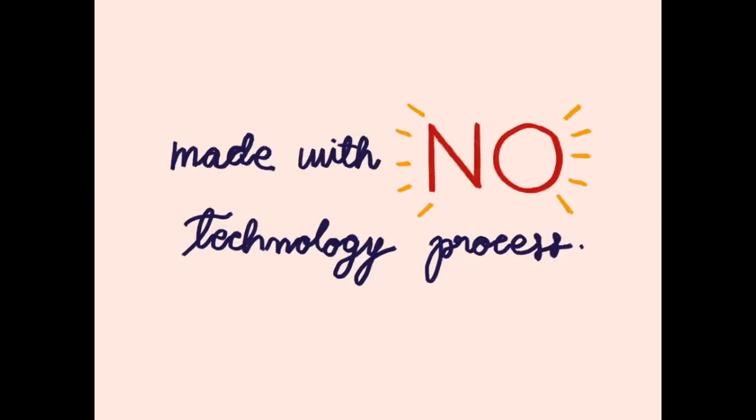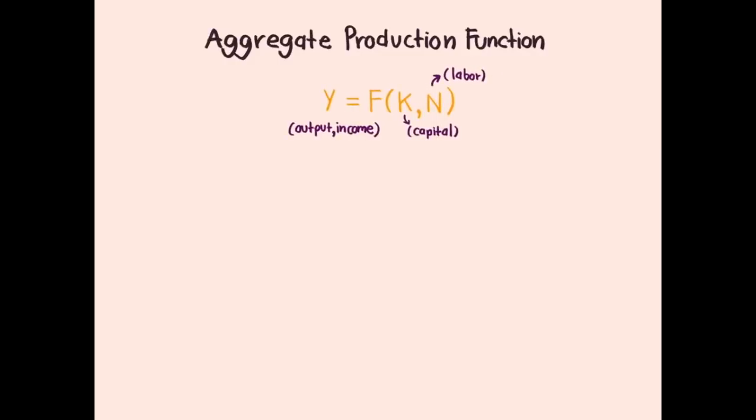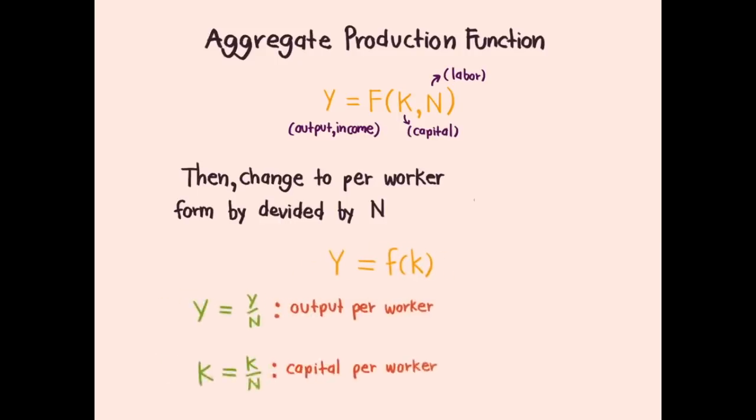We would like to talk about this basic Solow Growth Model with no technological progress. We need to use the aggregate production function in per-worker form because economic growth is measured by GDP per capita. By dividing aggregate production function by N, it will become y equals function of k, where small y represents output per worker (Y/N) and small k represents capital per worker (K/N).